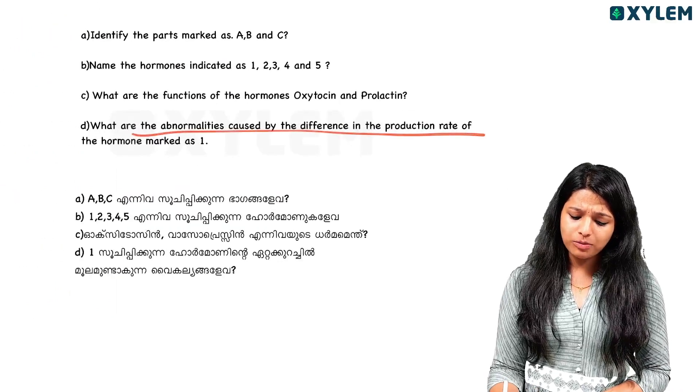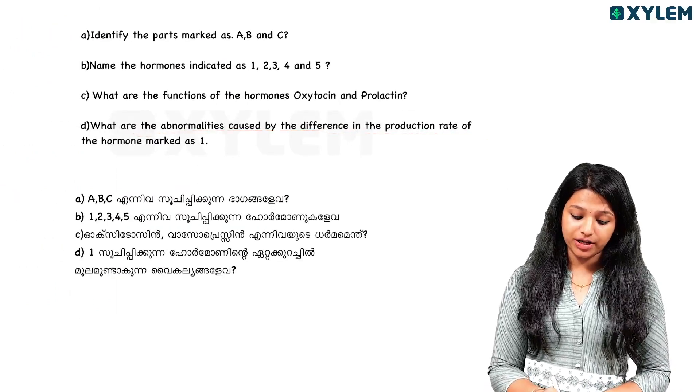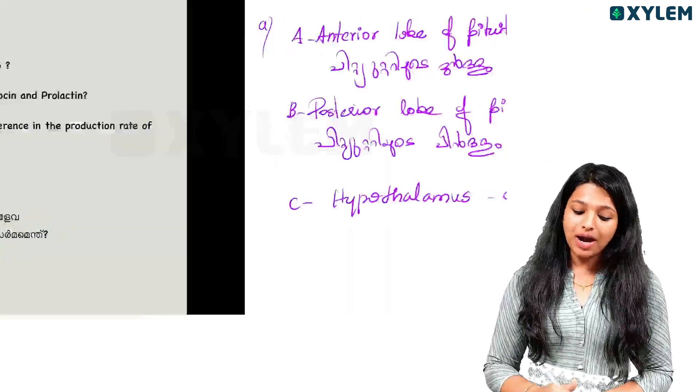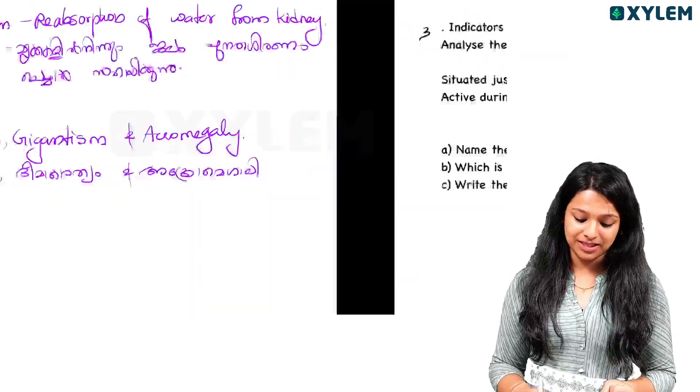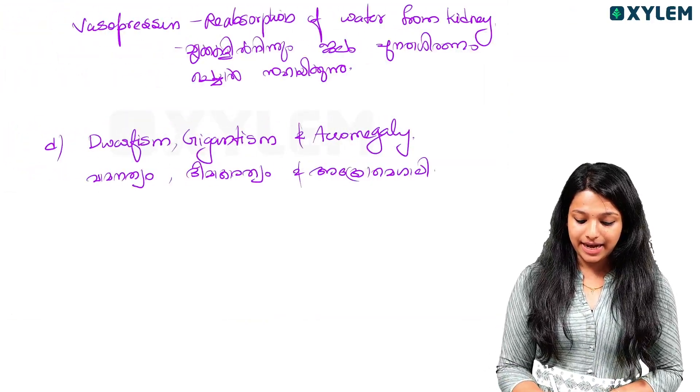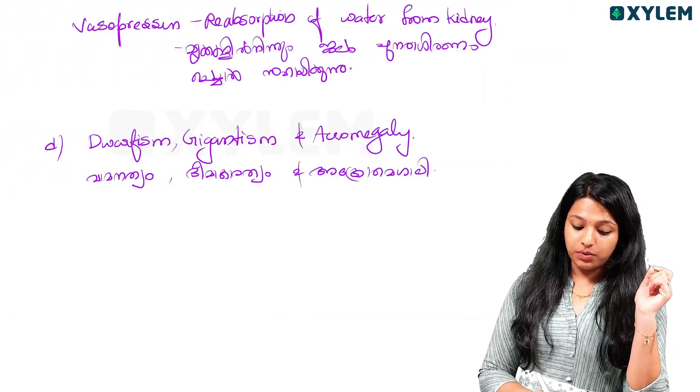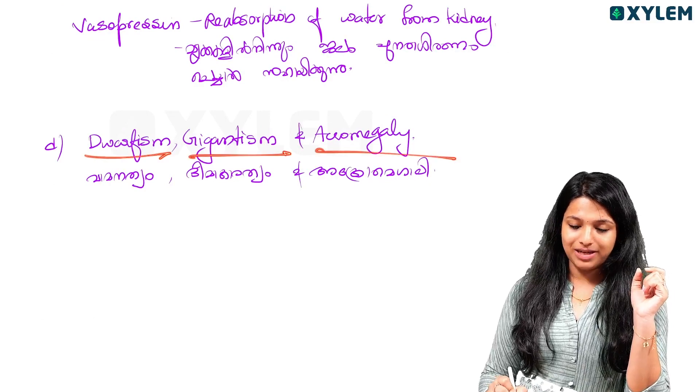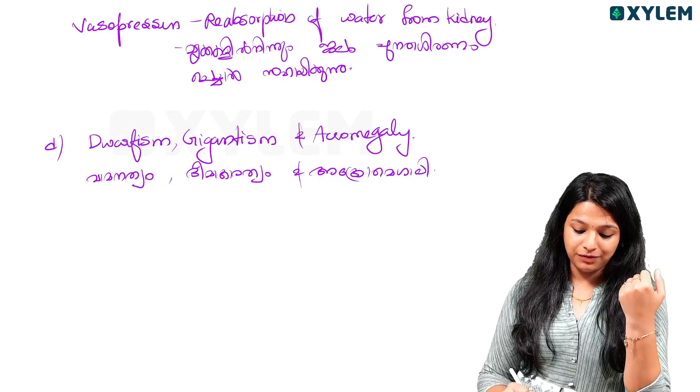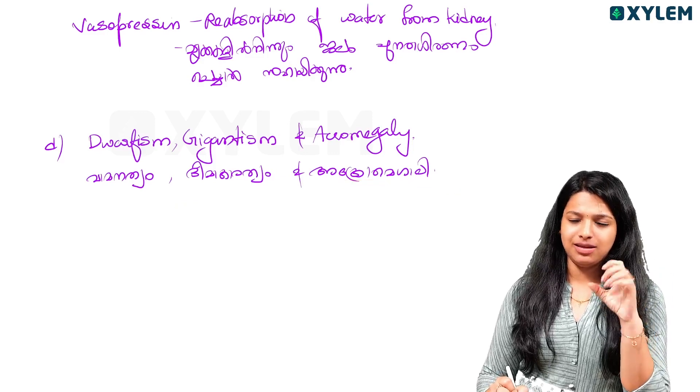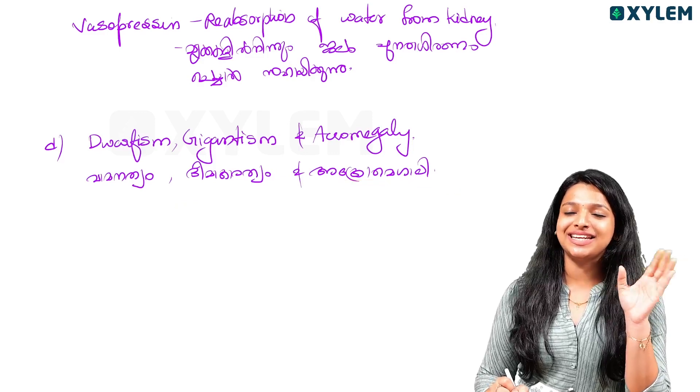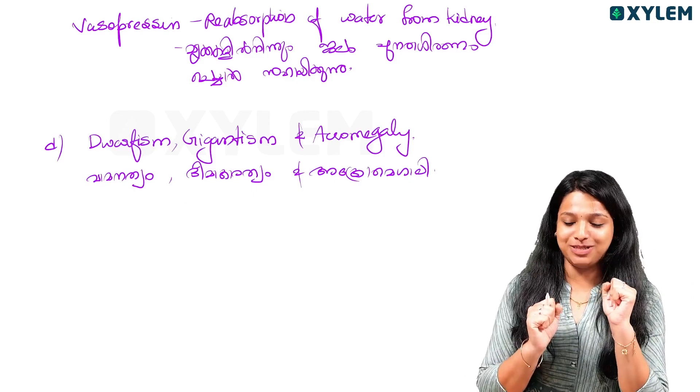What are the abnormalities caused by the difference in the production rate of hormone marked as one? 1 is somatotropin. We have to learn about dwarfism, gigantism, and acromegaly. It is a facility for small people. It is a facility for the body.